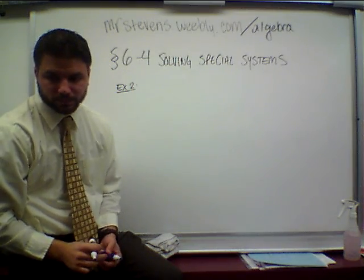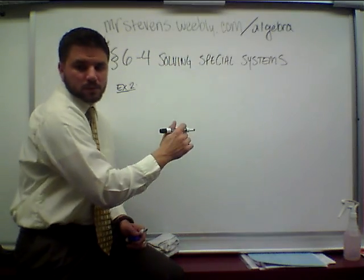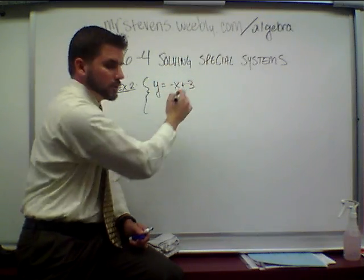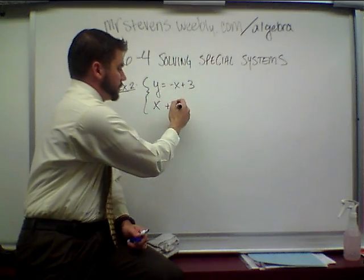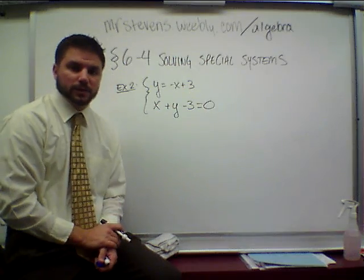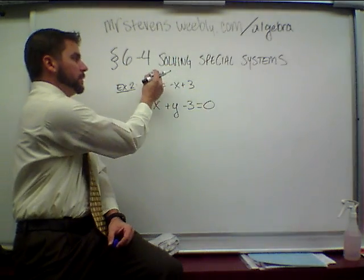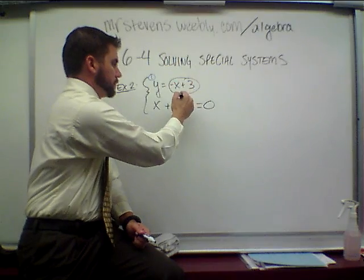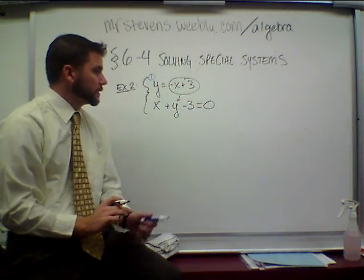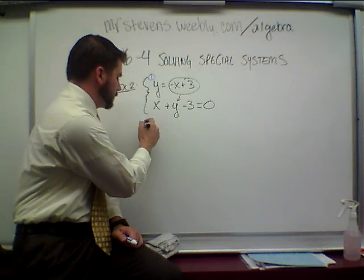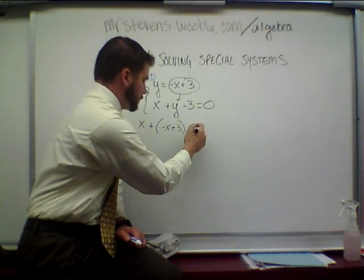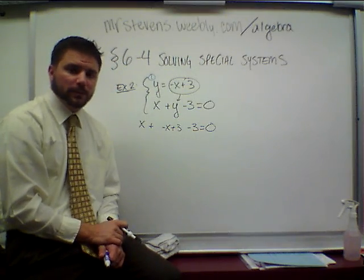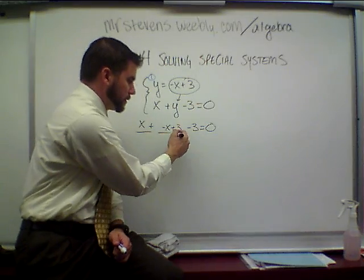Our second example is y equals negative x plus 3, and x plus y minus 3 equals 0. Once again, step 1 is taken care of for me, so I'm going to use the substitution method — I've already got a y that is completely isolated. I'll take the y and substitute in negative x plus 3. I've got a positive outside, nothing to distribute, so I can drop the parentheses. From here I'll combine like terms.